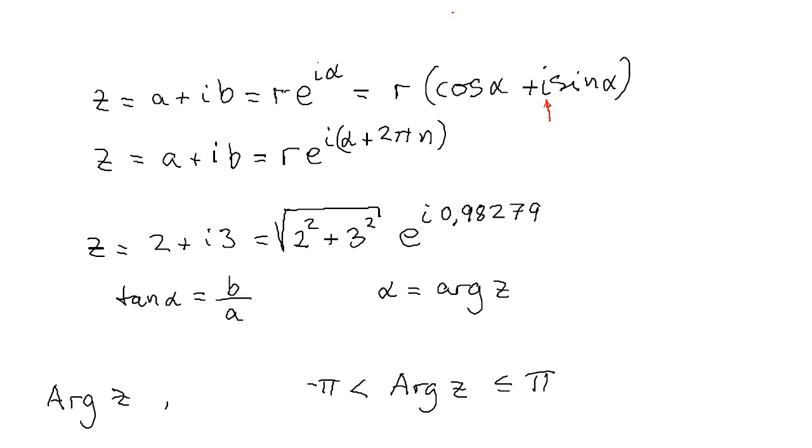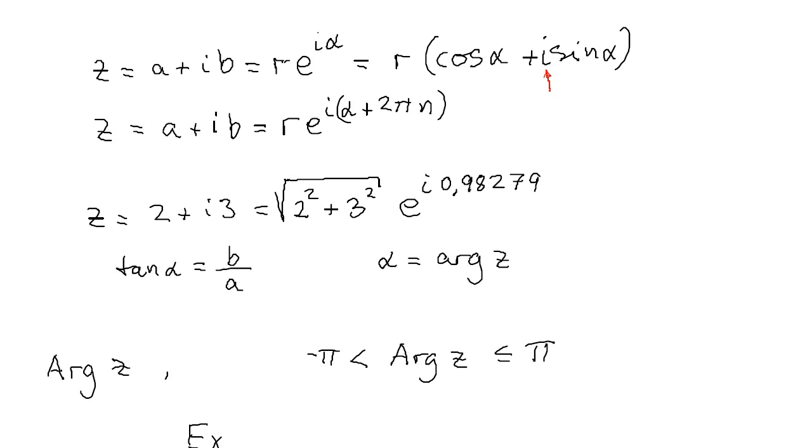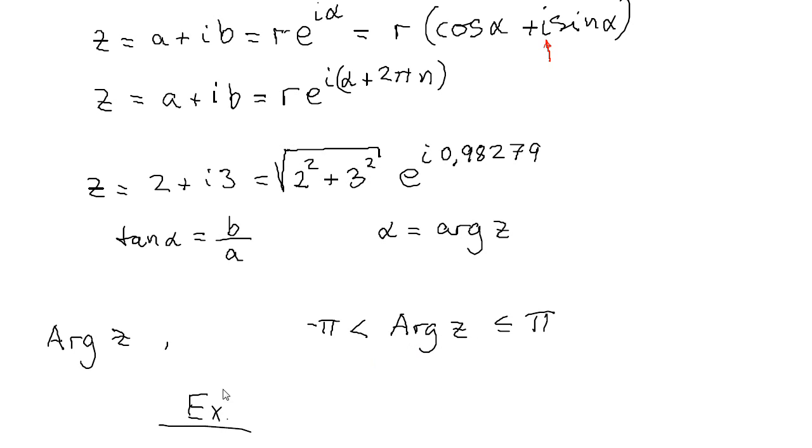And as we know, this alpha value is not uniquely defined. We can add a multiple of 2π, integer multiple of 2π to this value. Therefore, we need some function which uniquely defines this alpha value. And it's called the argument, the principal argument. The general value of this angle is called the argument with small a. If we use capital A, then we have the principal argument, which is defined as the angle from minus π, not including minus π, to π.